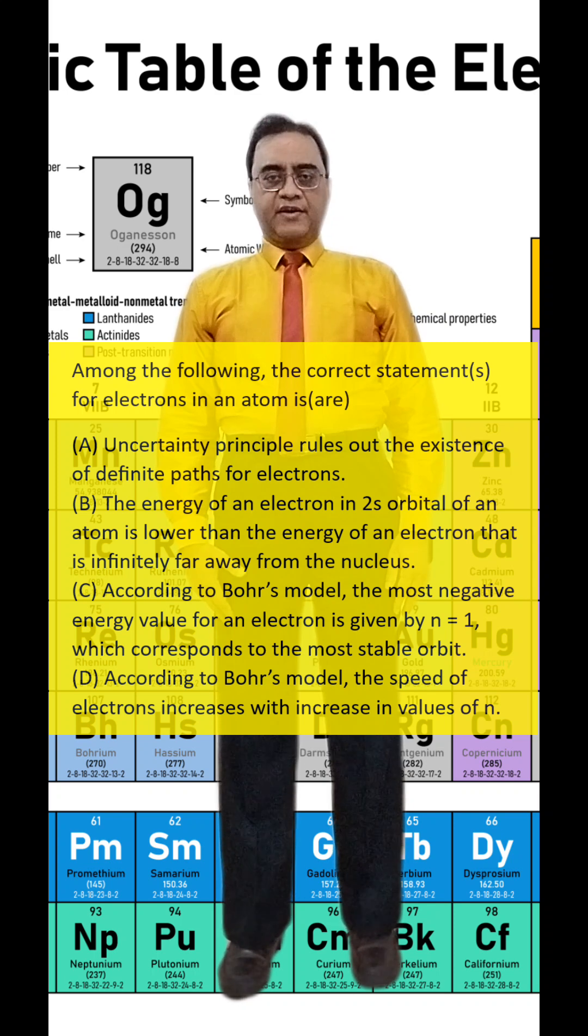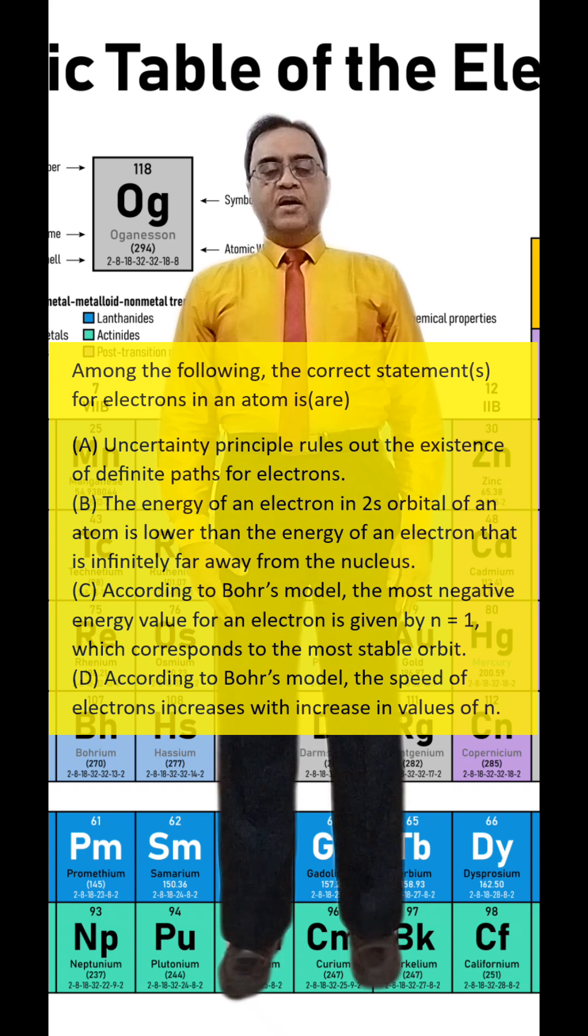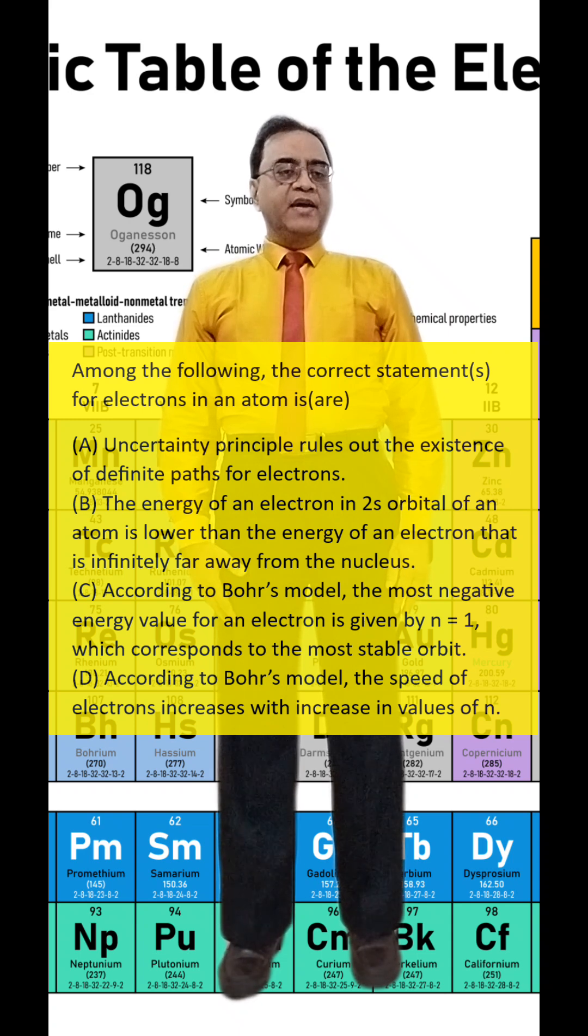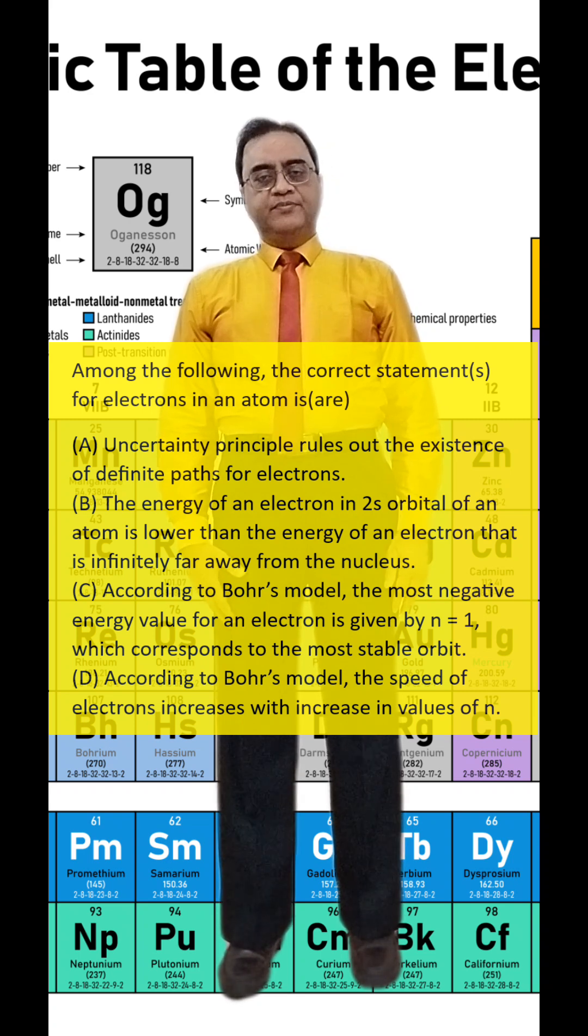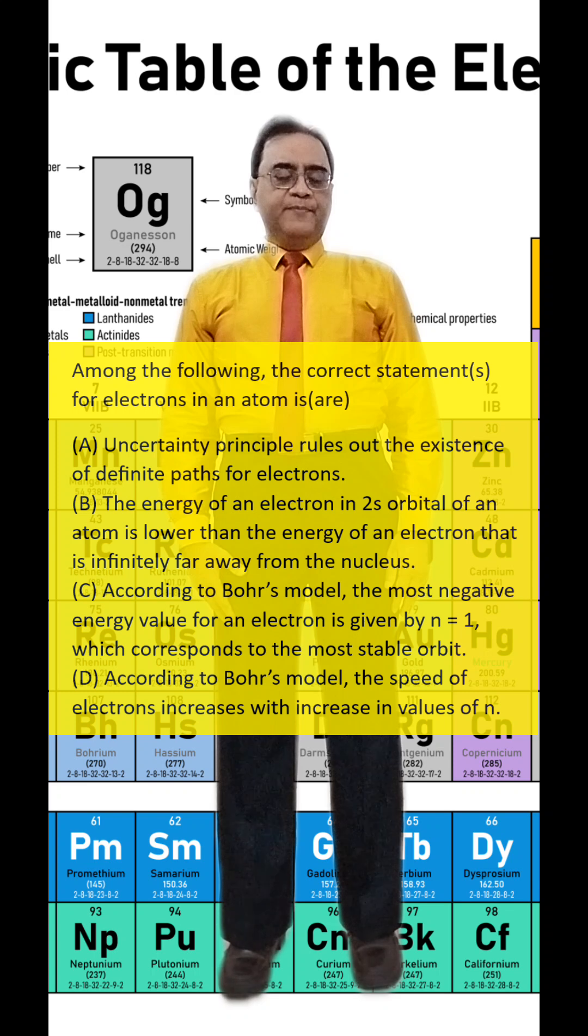Option B is correct. C. According to Bohr's model, the most negative energy value for an electron is given by n equal to 1, which corresponds to the most stable orbit. So at infinity, it is 0.